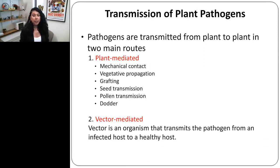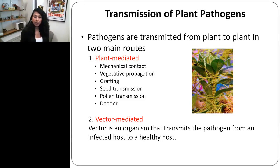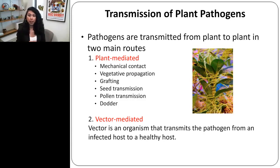Plant pathogens are transmitted from plant to plant in two main routes. There's plant-mediated, which can include mechanical contact between plants, vegetative propagation via cuttings, grafting, seed transmission, pollen transmission, and also a unique mechanism via a parasitic plant called dodder that can transmit the virus from one plant to another. You also have vector-mediated transmission. A vector is an animal or organism that transmits the pathogen from one infected host to a healthy host — a very common example is the mosquito that transmits Plasmodium, which causes malaria. But my research is focused on plant pathogens.